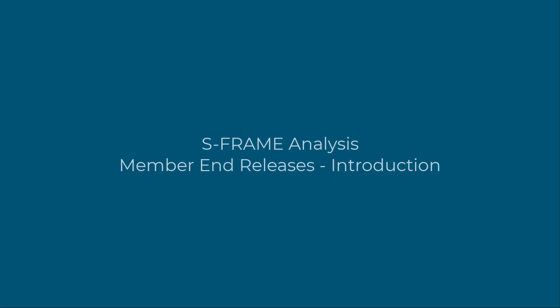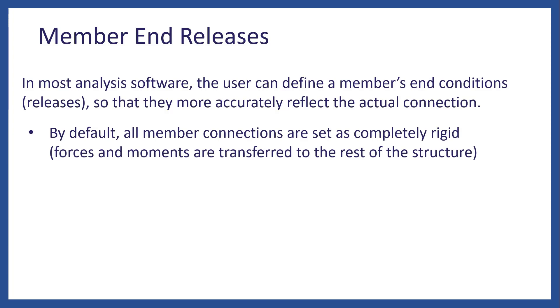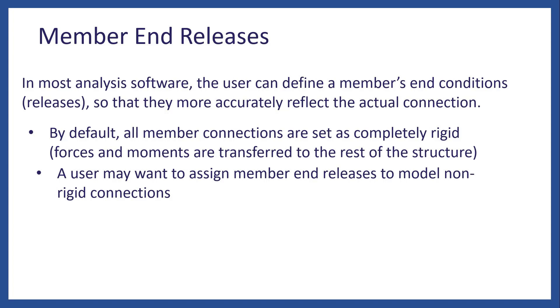In this opportunity, we will give an introduction to member end releases. In MooseAnalysis software, it is required to define the end conditions of every member so that they can reflect more accurately the actual connection of the member. By default, all member connections are set to act as completely rigid, meaning that forces and moments are transferred to the rest of the structure. A common example where a user may want to assign a member end release is when modeling a non-rigid connection.